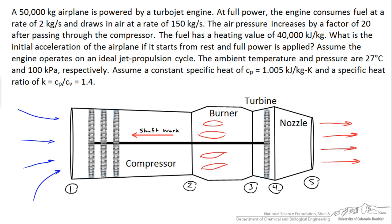The key to solving this problem is to do a series of energy balances and isentropic considerations. Starting with an energy balance around the compressor: air flows in and out, and shaft work enters to compress the air by a factor of 20 (p2 = 20·p1). This shaft work comes from the turbine output.